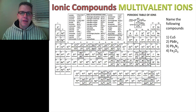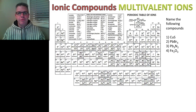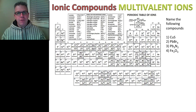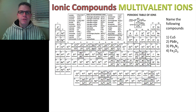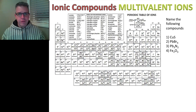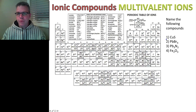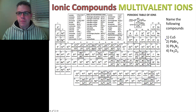I know there are a lot of videos we're doing on this, but I wanted to go through the naming — going from name to formula and formula to name — of our ionic compounds. In the last video we talked a little bit about multivalent ions. Now we're going to do some examples on how to name compounds that have multivalent ions. In this video we're going to go from the formula to the name.